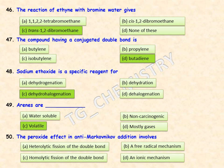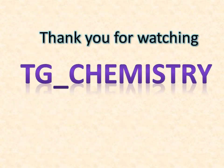Options for the peroxide effect question are: heterolytic fission of the double bond, a free radical mechanism, homolytic fission of the double bond, or ionic mechanism. Anti-Markovnikov addition occurring in the presence of organic peroxides adopts a free radical mechanism, so option B is the right answer.